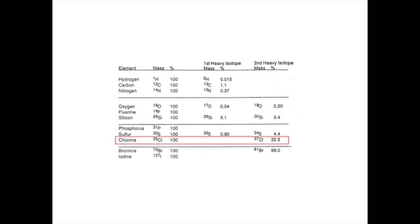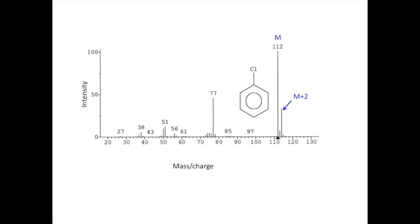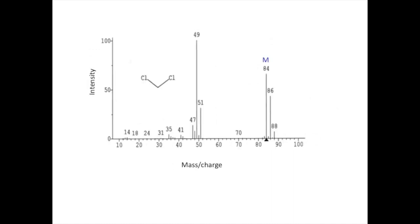Chlorine stands out from the other elements in that it has a heavy isotope two units higher than the most abundant isotope at 35. It's also distinctive because the heavy isotope is practically one-third as abundant as the light isotope. This leads to an unmistakable pattern in the high mass cluster in which a peak one-third as tall as the molecular ion appears at M plus 2.